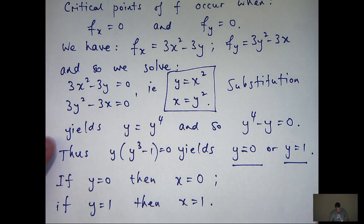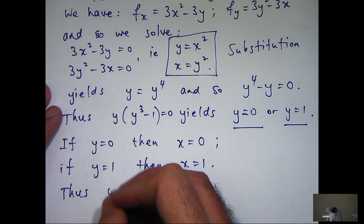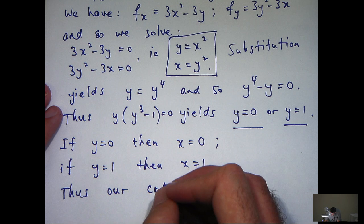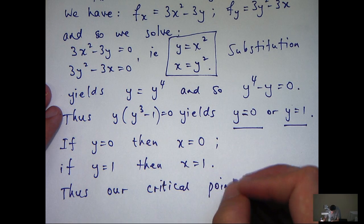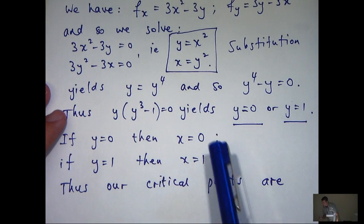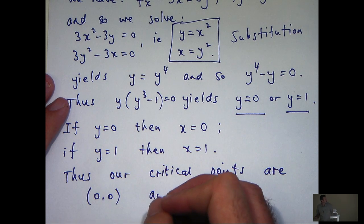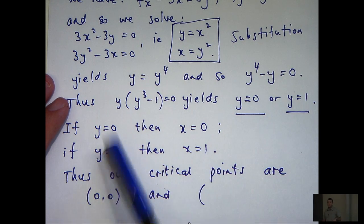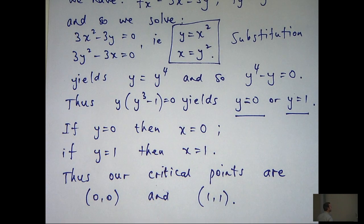So we've calculated our critical points now. So zero, zero and one, one. So that's the first half of the question done.